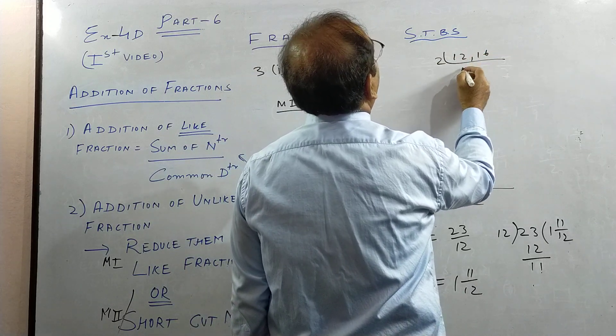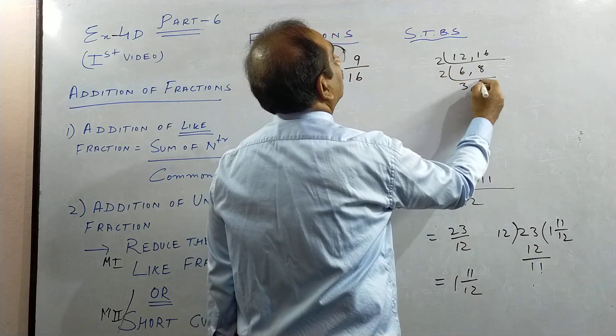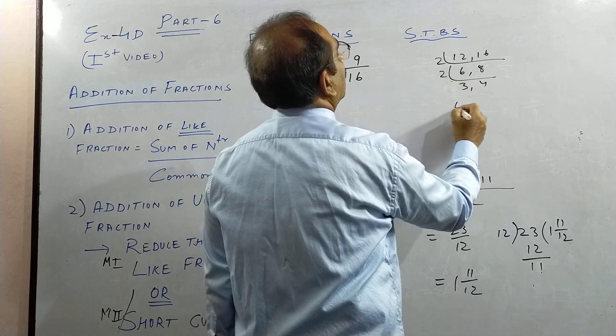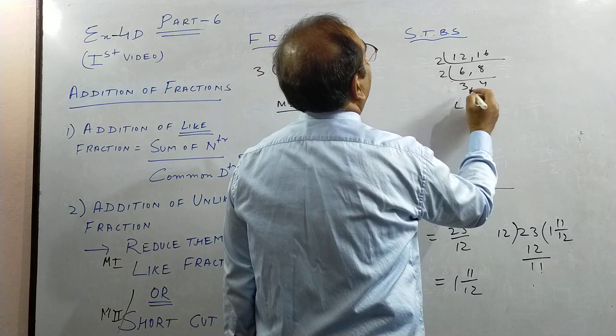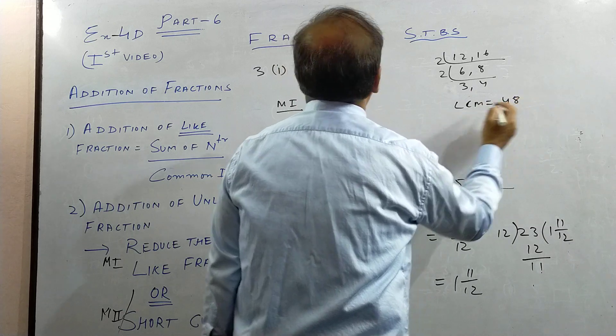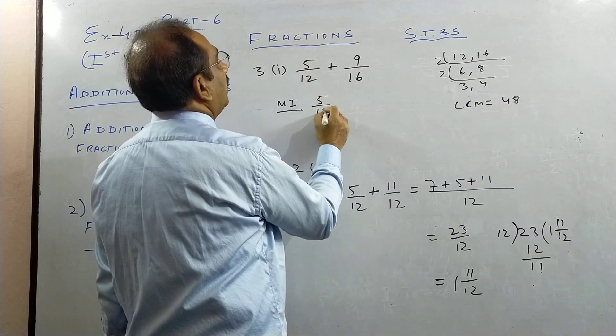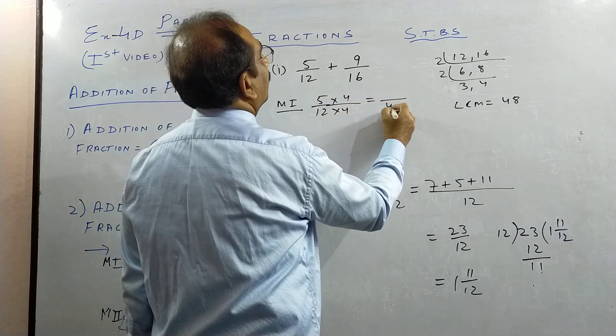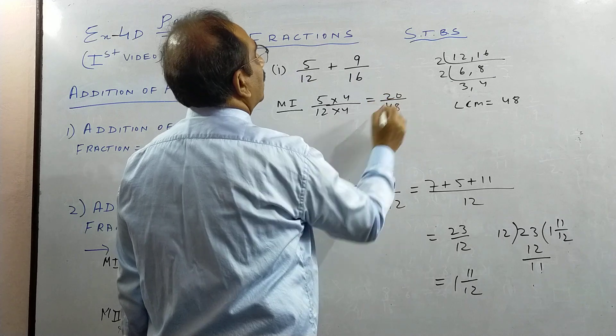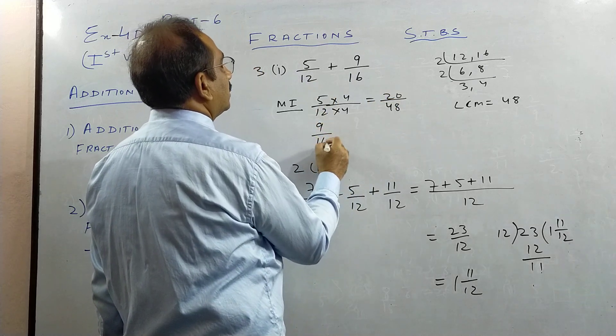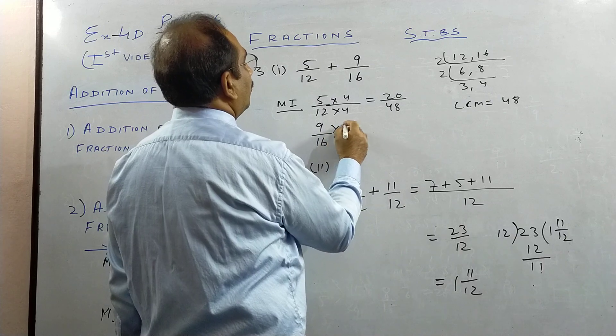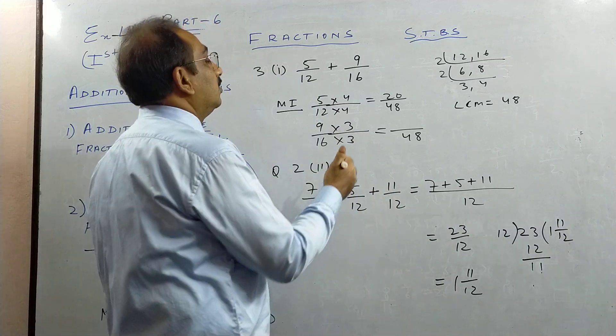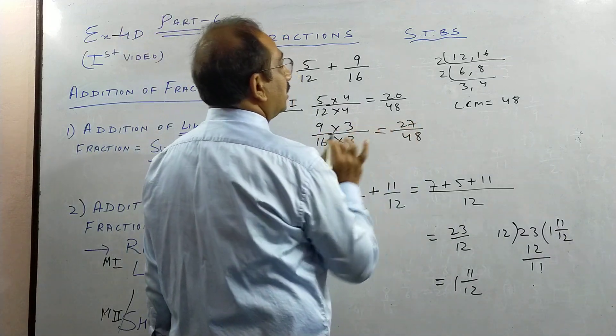Make them to like fractions. You see my earlier sums. Find LCM of 12 and 16. This goes with the first prime number 2, then again 2. And nothing is common here, so you can stop here. So your LCM is 4 times 3 is 12, times 4 is 48. So 5 by 12, how will you make 48? 12 times 4 is 48.